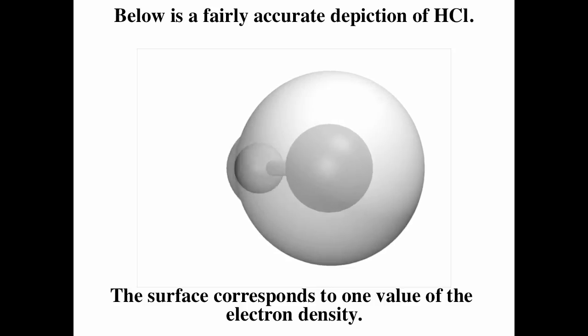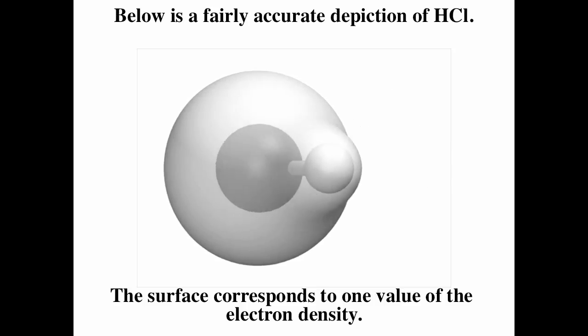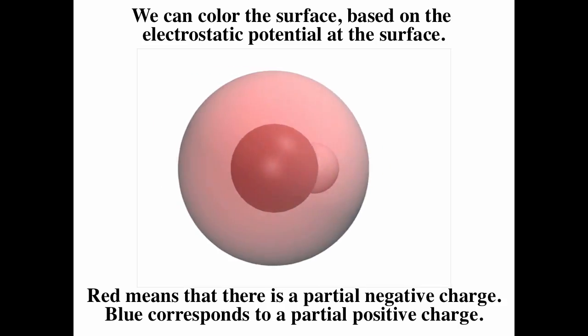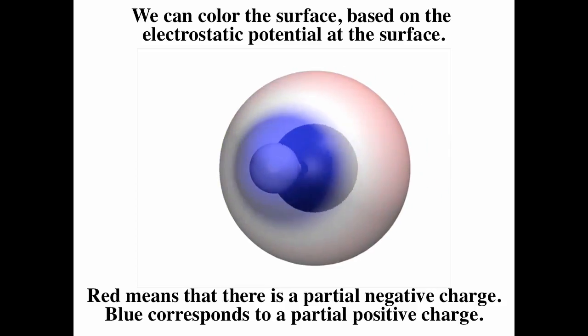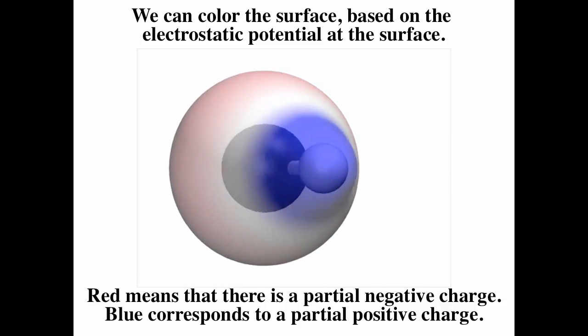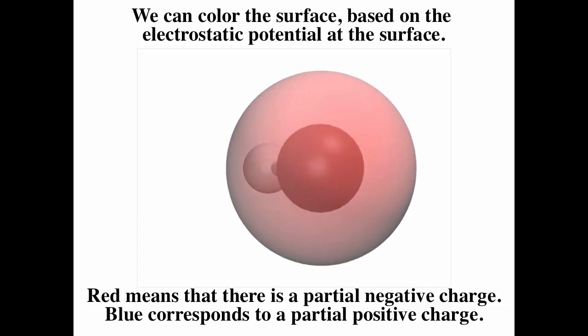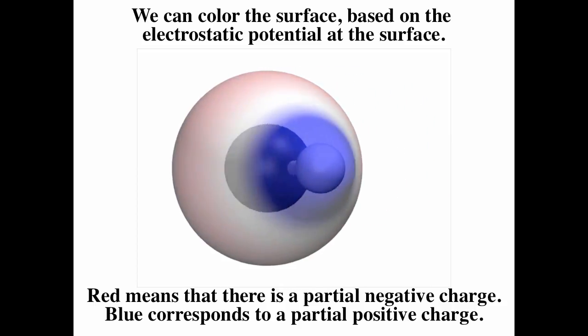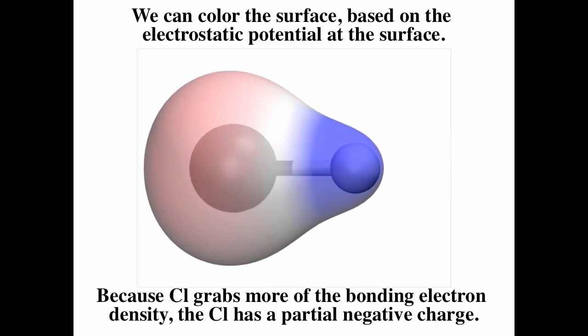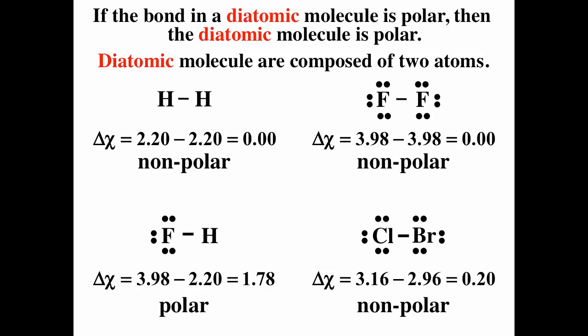A nice depiction of HCl shows that molecules are not really balls and sticks — they're more glob-like. The surface represents one value of electron density, and it looks kind of like a pear because chlorine is bigger than hydrogen. If we color this based on electrostatic potential, red corresponds to a partial negative charge and blue to a partial positive charge. HCl is a polar molecule because chlorine grabs more of the bonding electrons, giving it a partial negative charge, while hydrogen has a partial positive charge. For diatomic molecules only, if the bond is polar, the molecule is polar.